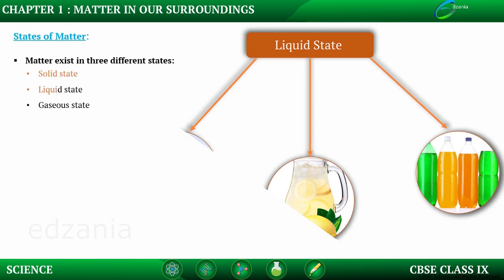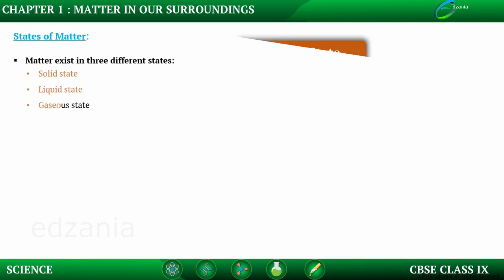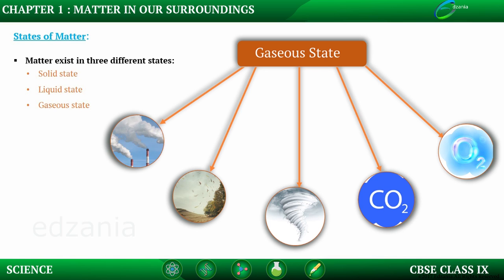Examples of liquid state are water, laminate, cold rain, etc. Examples of gaseous state are blowing air, wind, storm, oxygen that you breathe in, and carbon dioxide that you breathe out — they all come under gaseous state.